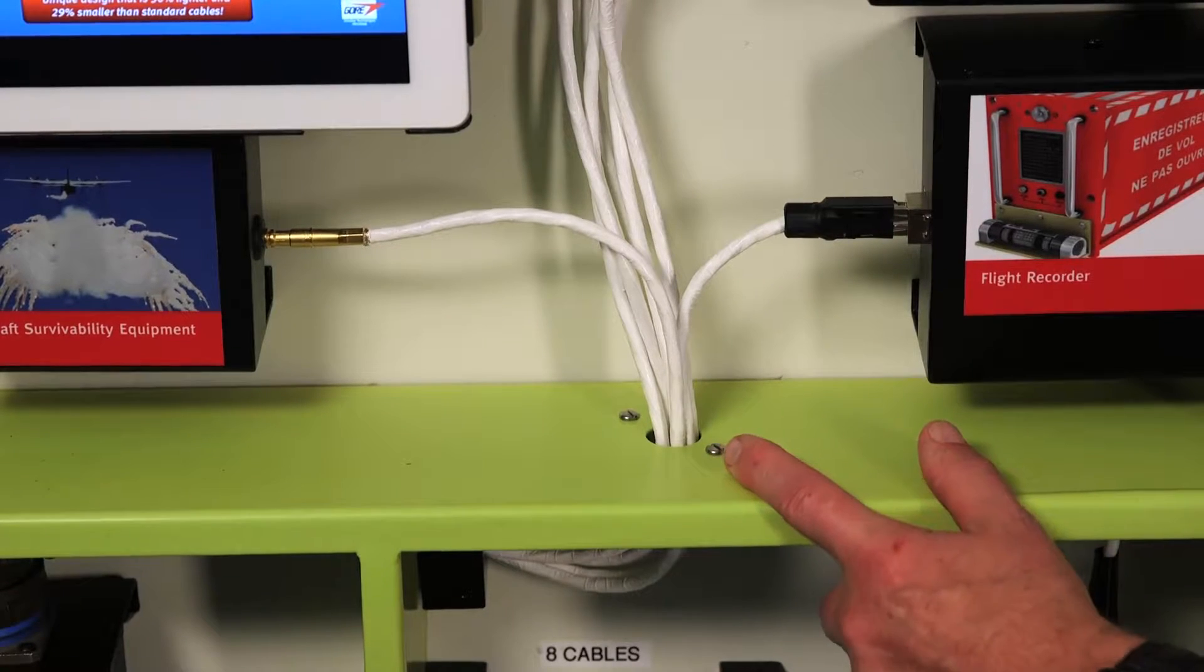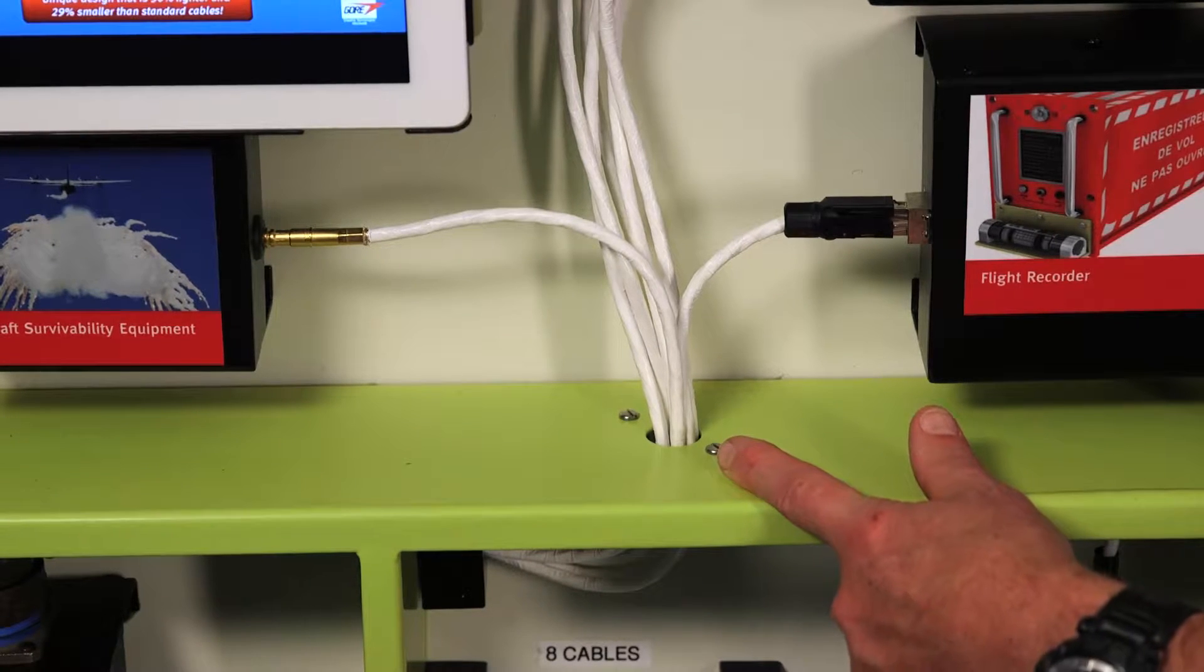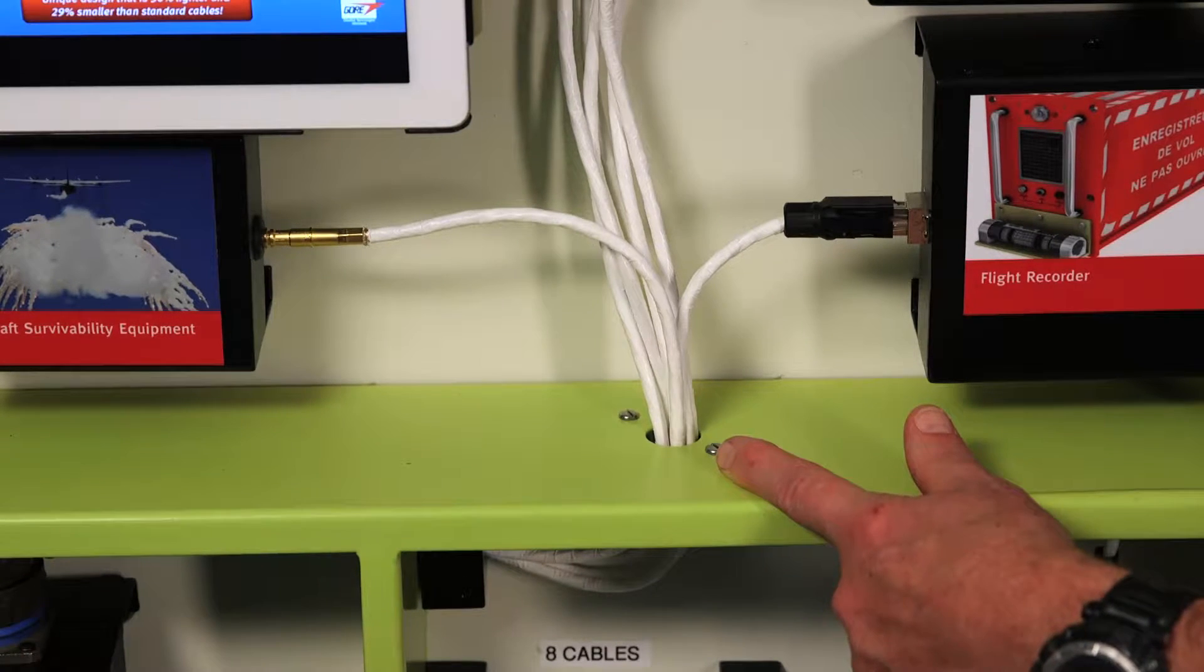In this section we show six 26 gauge cables going through a three quarter inch hole, showing that the small size allows you to get through smaller passages.